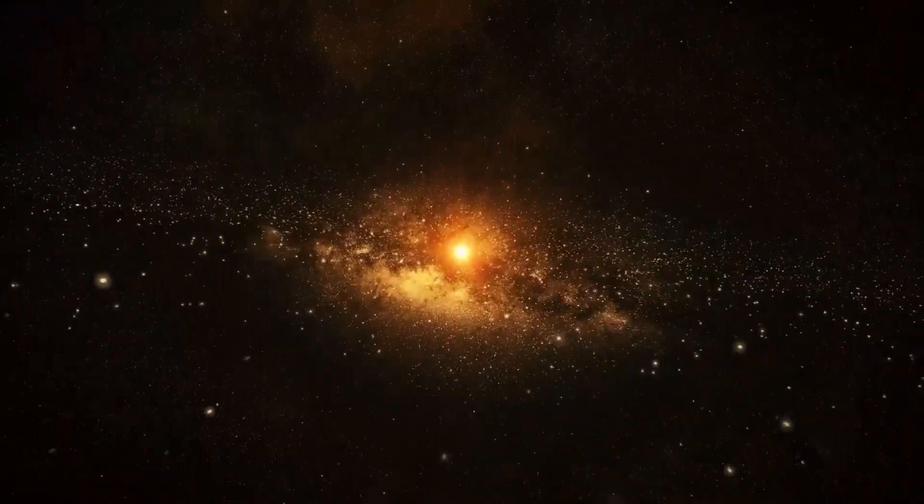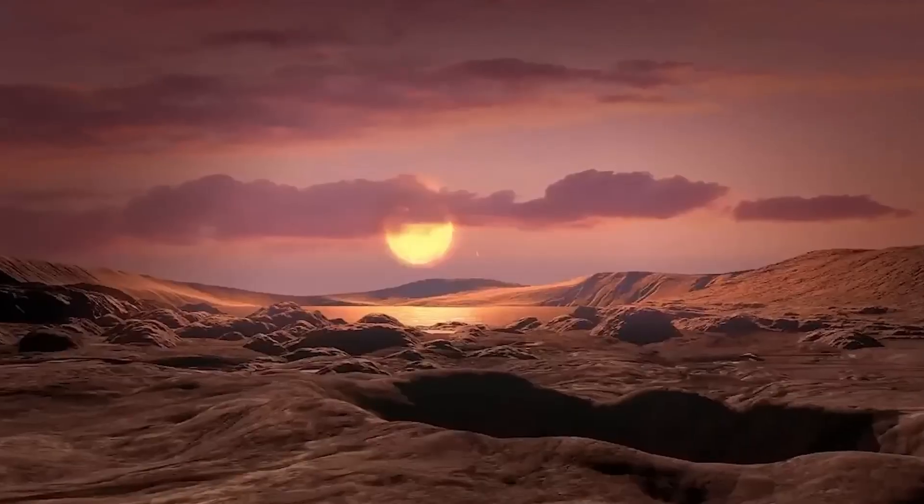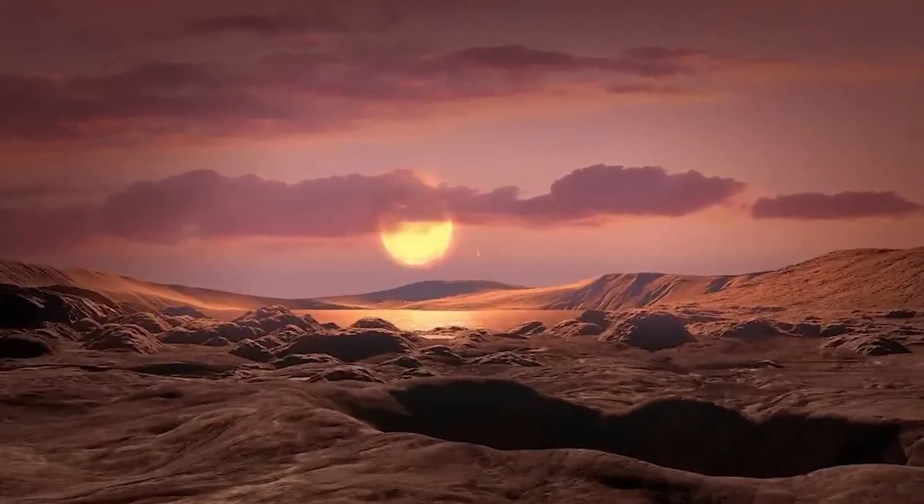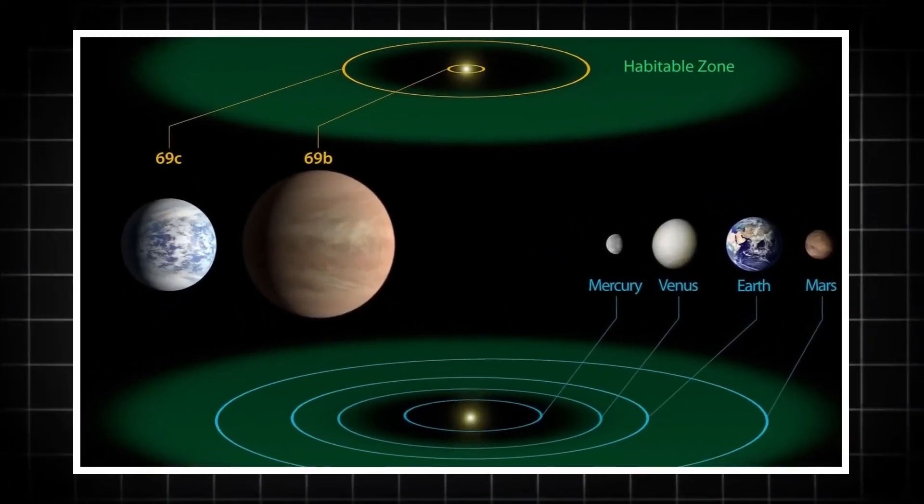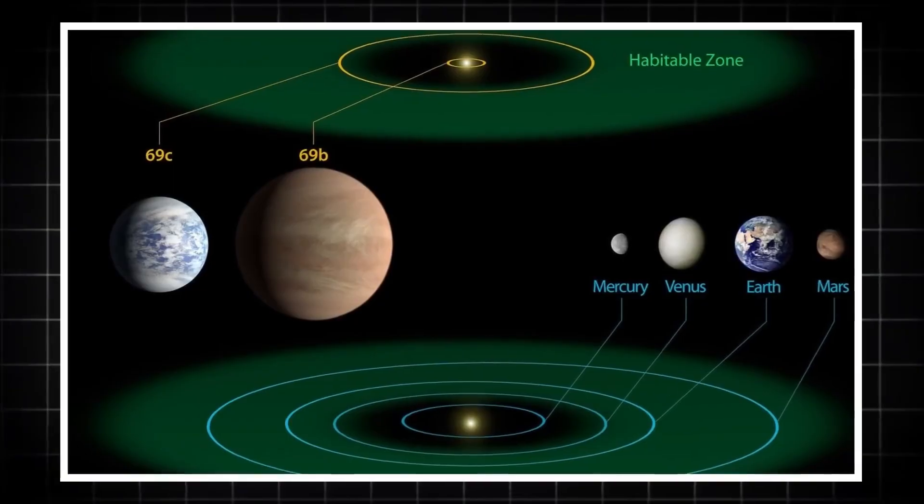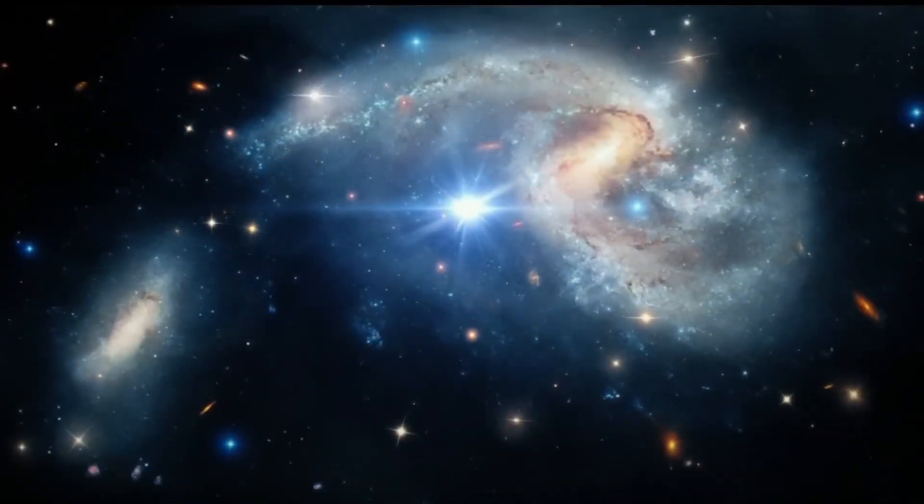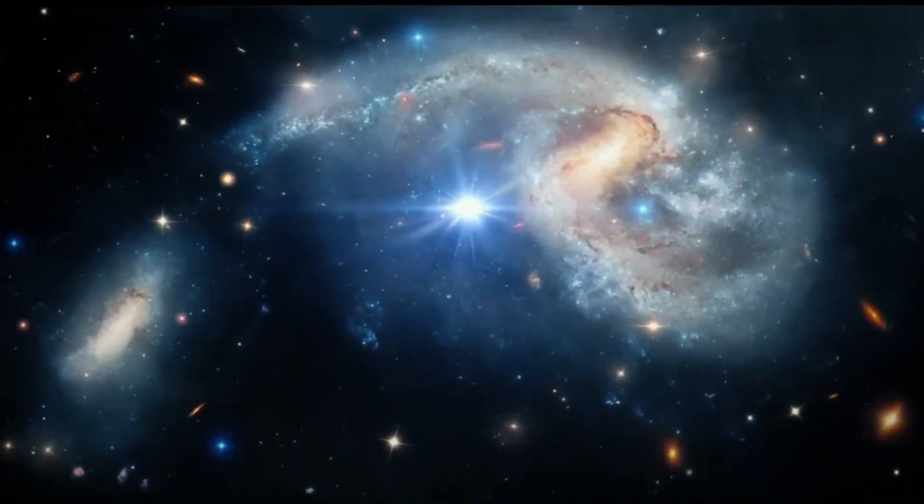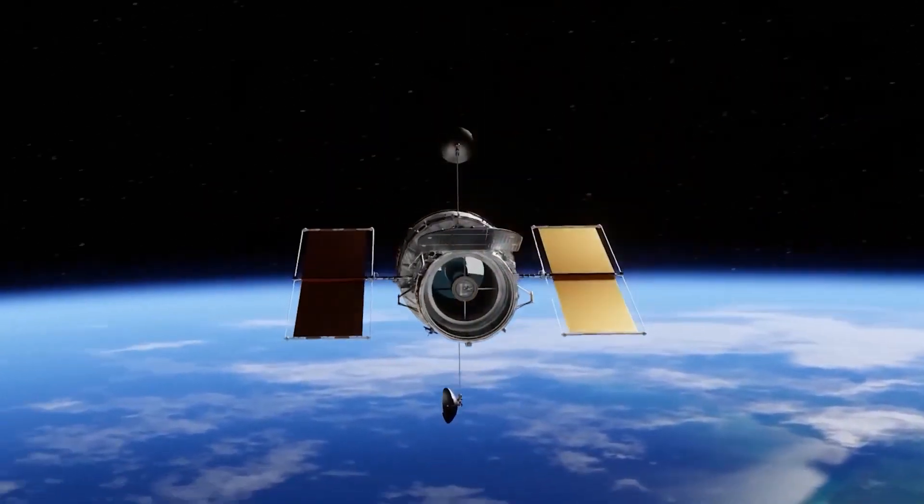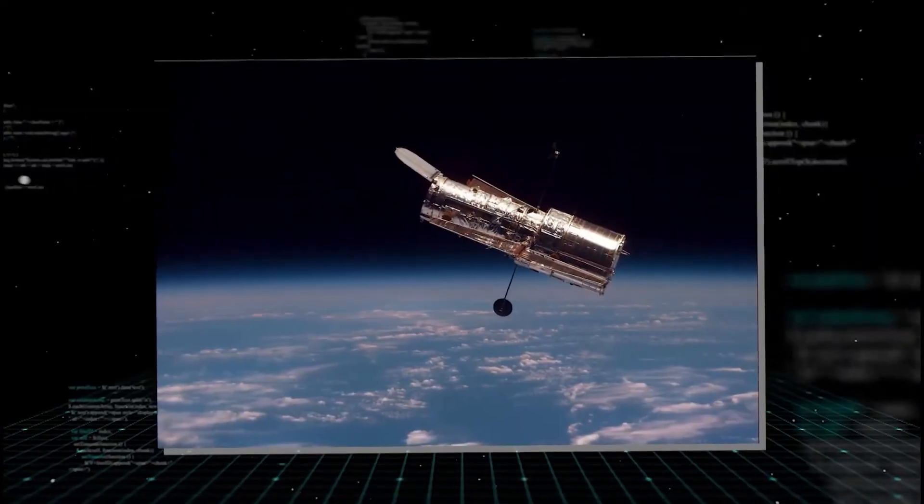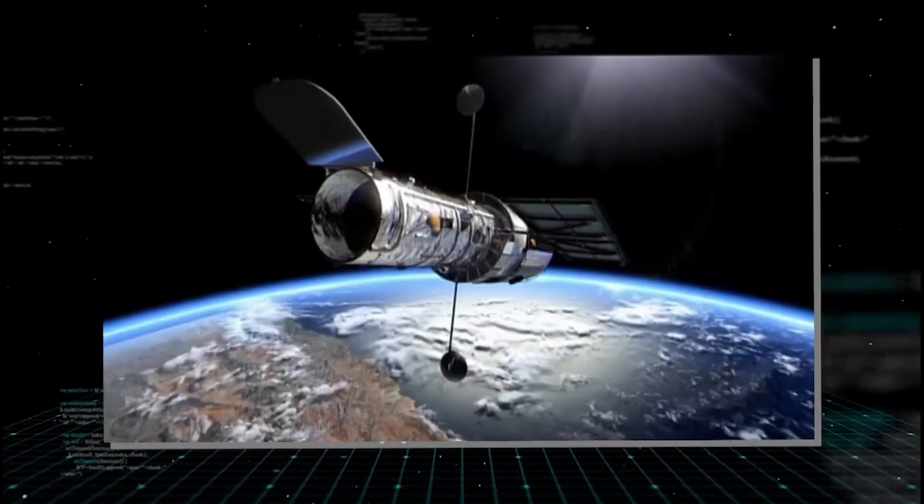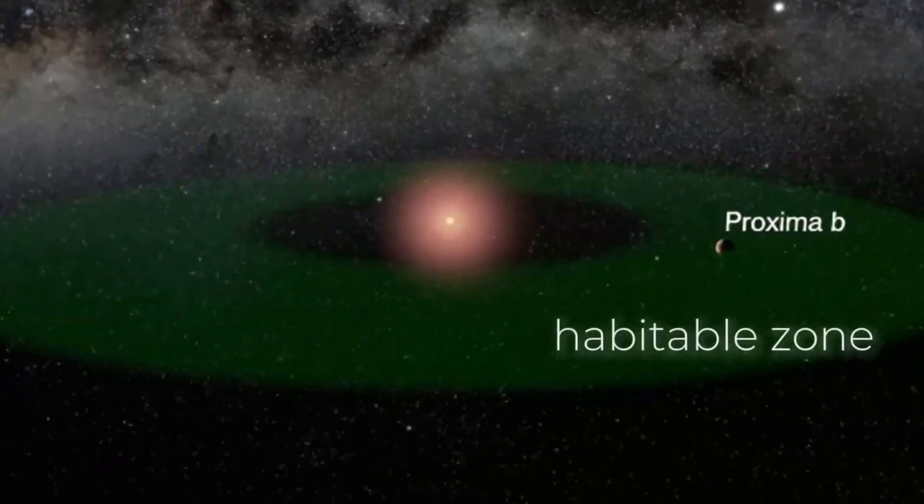This included adjusting the mirror segments to ensure they were perfectly aligned. The entire process took several months, but the wait was worth it. In the first few months of operation, the telescope began to deliver stunning images of the universe, showing galaxies, nebulae, and other cosmic objects in incredible detail. The James Webb Space Telescope is revolutionizing our understanding of the universe. One of its primary missions is to study the formation of the first galaxies that appeared after the Big Bang. These early galaxies are incredibly faint and difficult to observe, but the telescope's infrared capabilities allow scientists to peer back in time and observe them as they were billions of years ago.